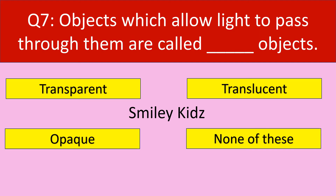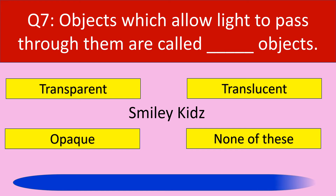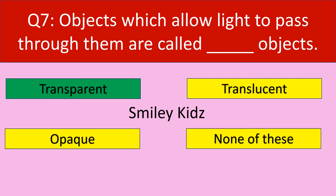Question number seven. Objects which allow light to pass through them are called as what objects? Options are transparent, translucent, opaque, and none of these. Your time starts now. Your time is up. The correct answer is transparent. Objects which allow light to pass through them are called transparent objects.